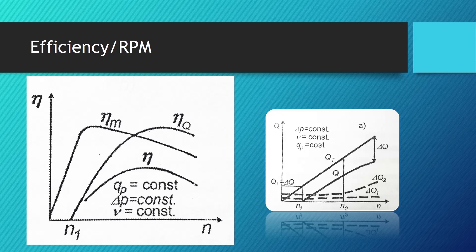The second diagram shows the relationship between the efficiency factor and RPMs while maintaining constant specific volume, constant pressure difference, and constant kinematic viscosity. The mechanical efficiency factor is zero when the RPMs of the pump are zero — obviously, because the pump is not working — and it grows steadily with increasing RPMs, reaching a maximum before declining slowly. The flow efficiency coefficient is zero up to the RPM value that provides sufficient pressure difference, at which point the pump starts to work.